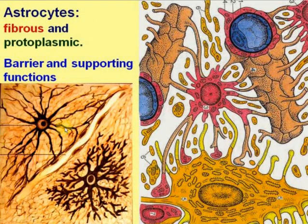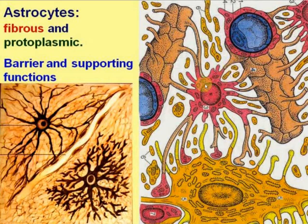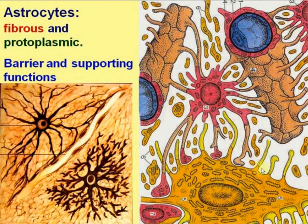Astrocytes may be fibrous, with thin long processes, or protoplasmic, with short thick branching processes. They provide barrier and supporting functions. The barrier function means that processes of astrocytes cover the neuron bodies — because neurons produce electricity, astrocytes isolate them from the environment. At the same time, their processes also cover the blood vessels where blood circulates, because blood fluid conveys electricity quite well. Astrocytes participate in blood-brain barrier formation, which prevents entrance of toxins or active substances from the periphery to the brain.